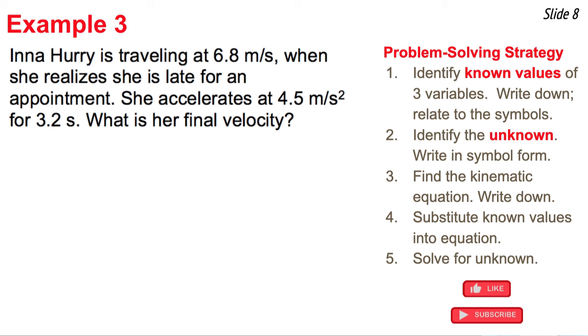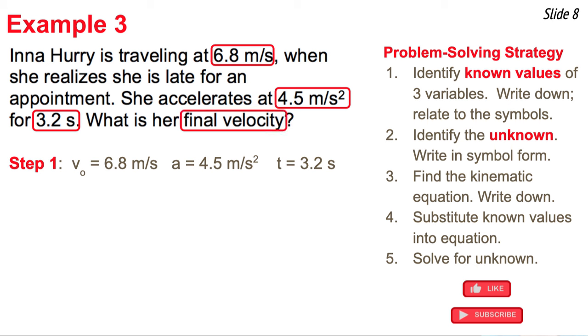This is the last of our three examples. In a hurry is traveling at 6.8 meters per second when she realizes she's late for an appointment. So she accelerates at 4.5 meters per second squared for 3.2 seconds. So you see the three known values there. The original velocity is 6.8 meters per second. The 4.5 meters per second squared, that's the A. And the 3.2 seconds, that's the T. So I write down the three known values in variable form as shown. Now I'm asked what's her final velocity. Step two is identify the unknown, and that's VF.